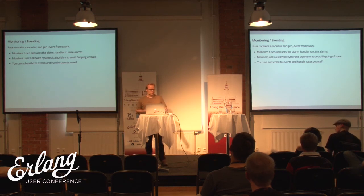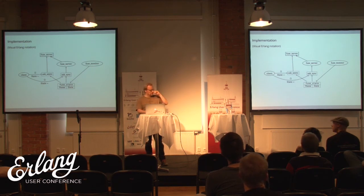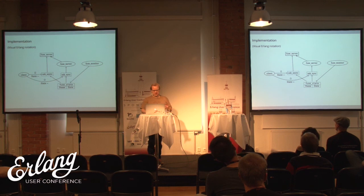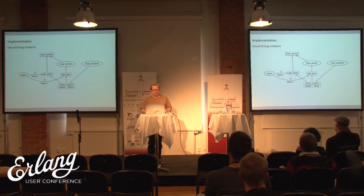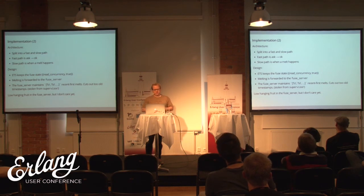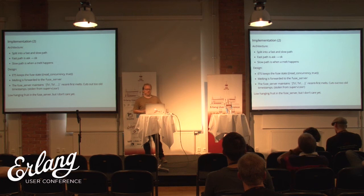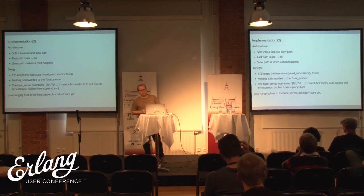On the implementation: this is the visual Erlang diagram of the architecture. The way it's built is that there are two paths: a fast path and a slow path. The fast path is the typical ask that hits an 'ok' — that's the thing that'll happen most often, so we want it to be very fast. A melt is allowed to be slow. We implement it with an ETS table, and the fast path just queries the ETS table directly — it doesn't even go through a gen_server — because that gives us parallel access. We define read_concurrency true on the ETS table for very fast access.